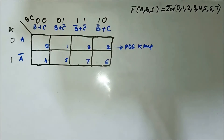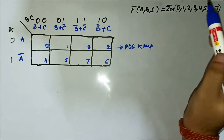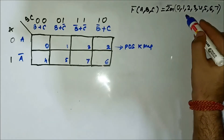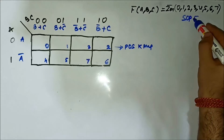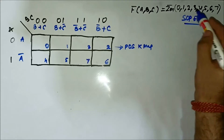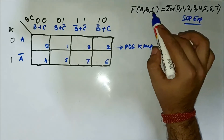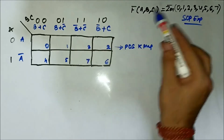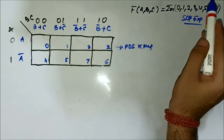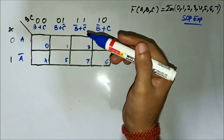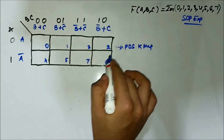This is the third question related to implementation of SOP expressions using POS KMAP. Here we have the SOP expression given in terms of the minterm values. It involves all the minterms possible using three variables, starting from zero to seven, so here we'll mark all of these cells.